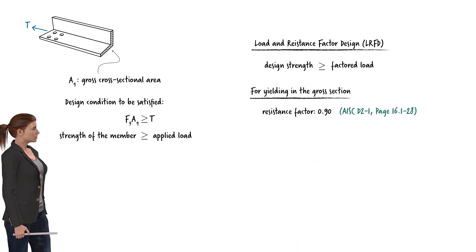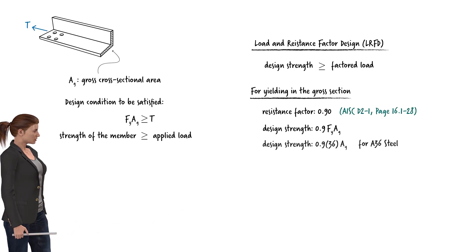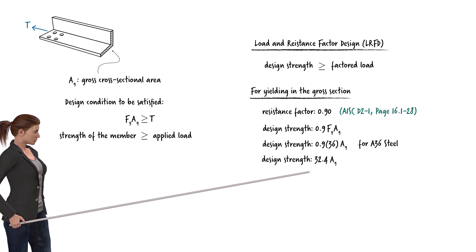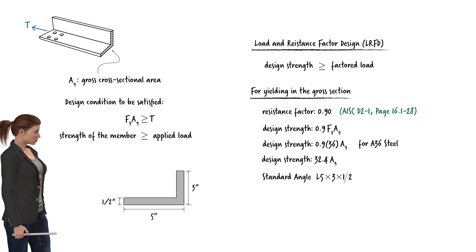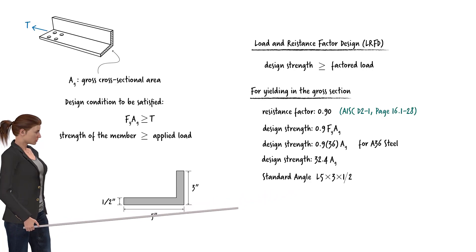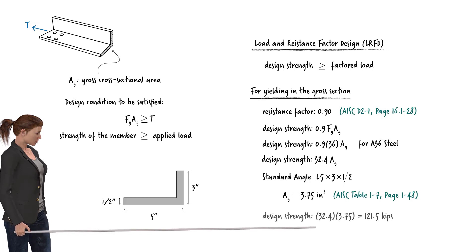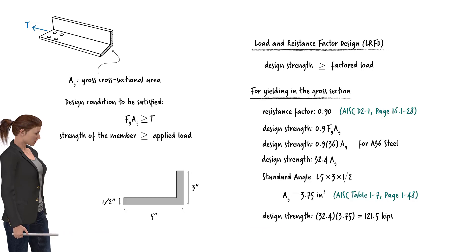For yielding strength in the gross section, the resistance factor phi is 0.90. Therefore, the design strength can be written as 0.90 × Fy × A_g. Since we are using A36 steel, Fy equals 36 ksi, so the design strength becomes 32.4 × A_g. Suppose we use a standard angle cross-section L5×3×½, which has a gross area of 3.75 square inches. The design strength of this section equals 121.5 kips — the factored load must not exceed this value.